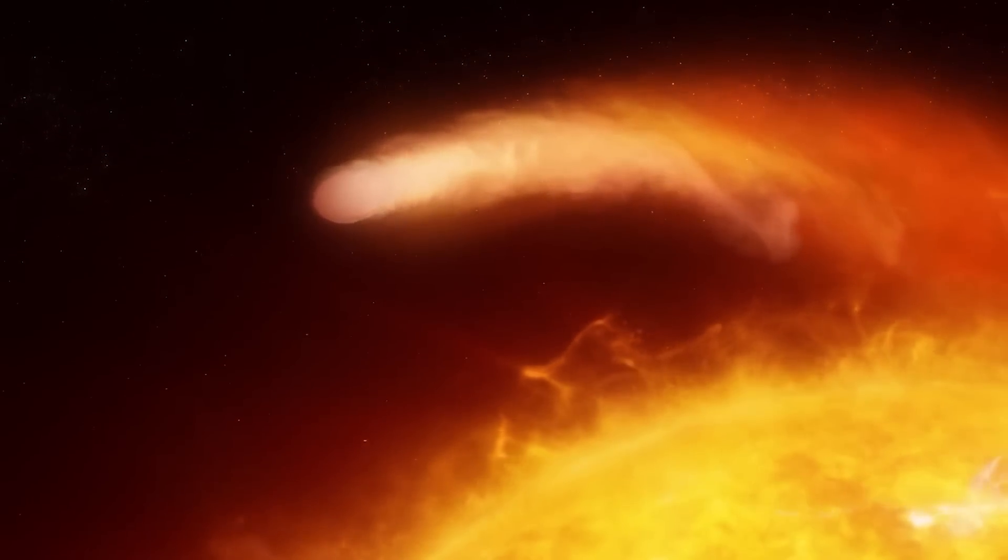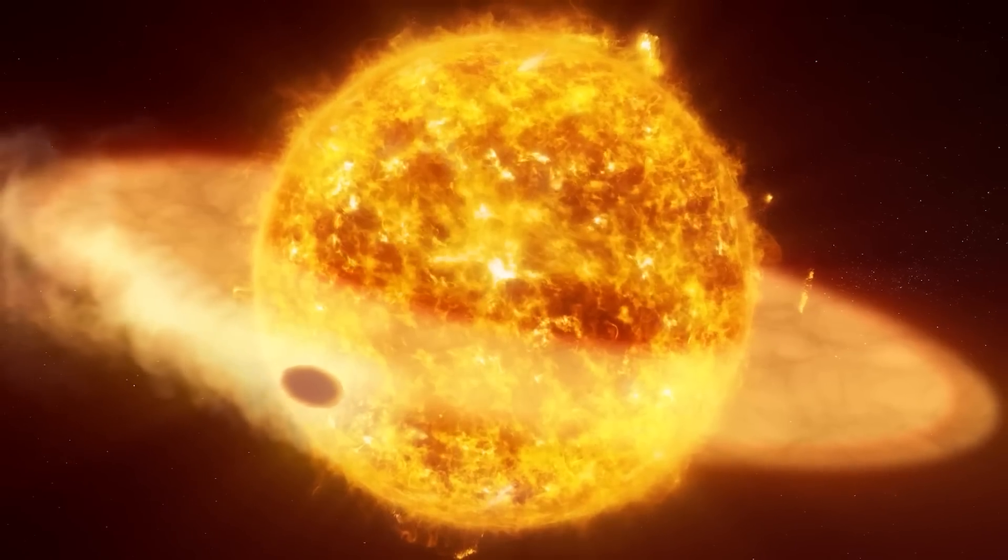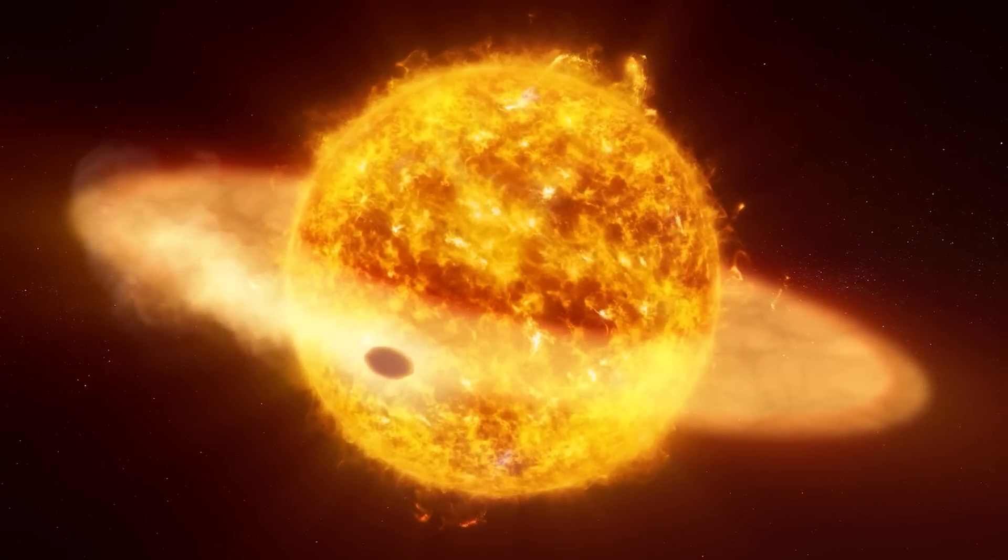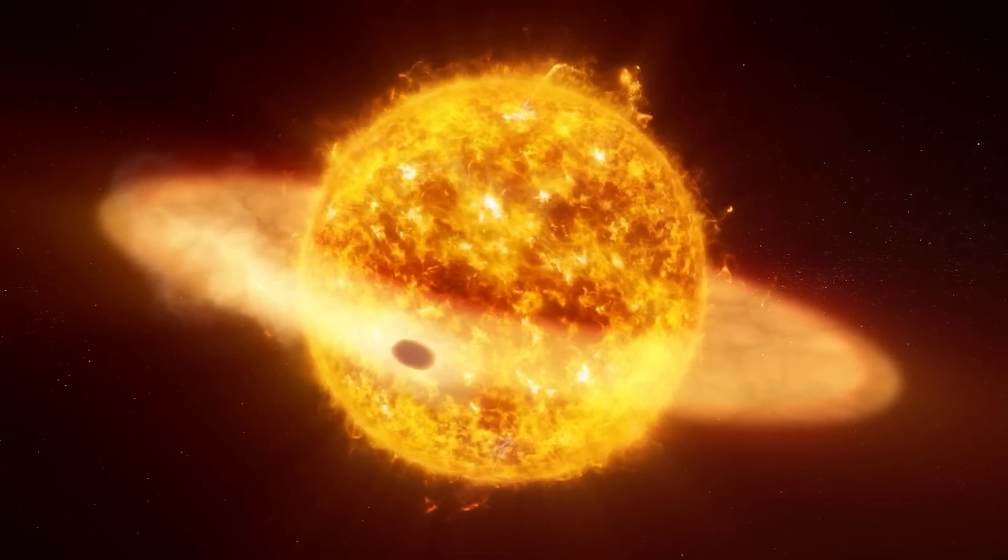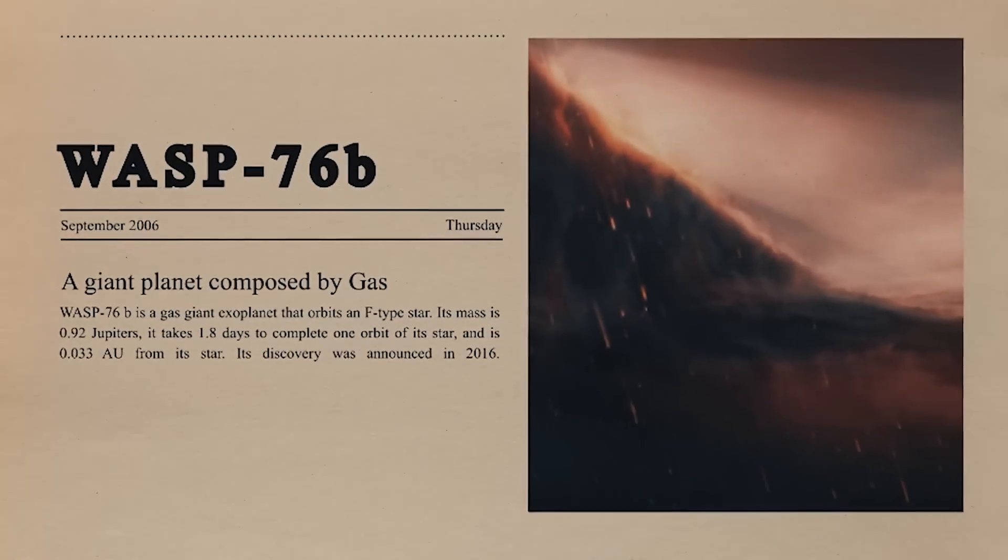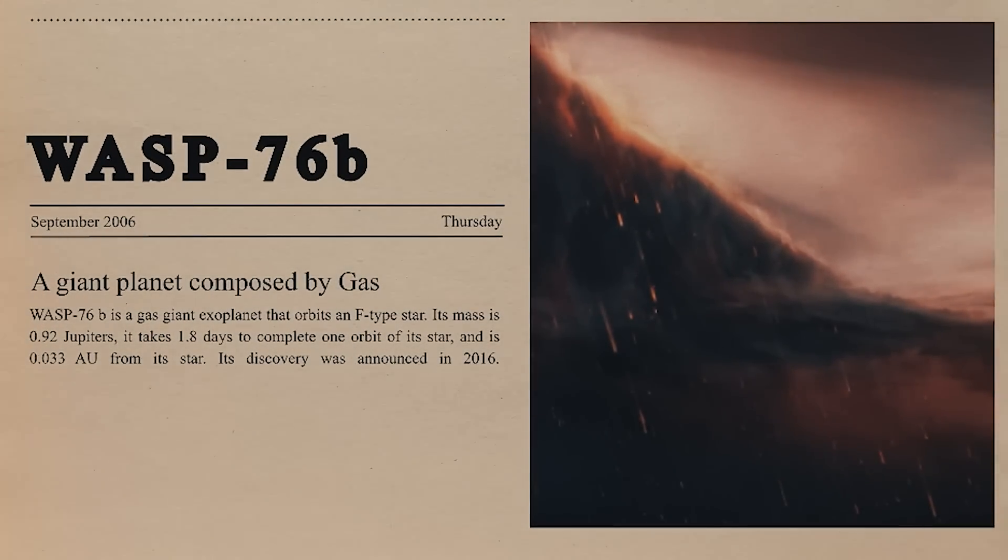The planet always faces the star because it is tidally locked to it. As a result, the dayside temperature rises to 2350 degrees Celsius, that's 4,300 degrees Fahrenheit. This is more than enough to trigger evaporation into the atmosphere of metals like iron. In addition, the radiation received by the dayside is millions of times greater than that received by our planet from the Sun.